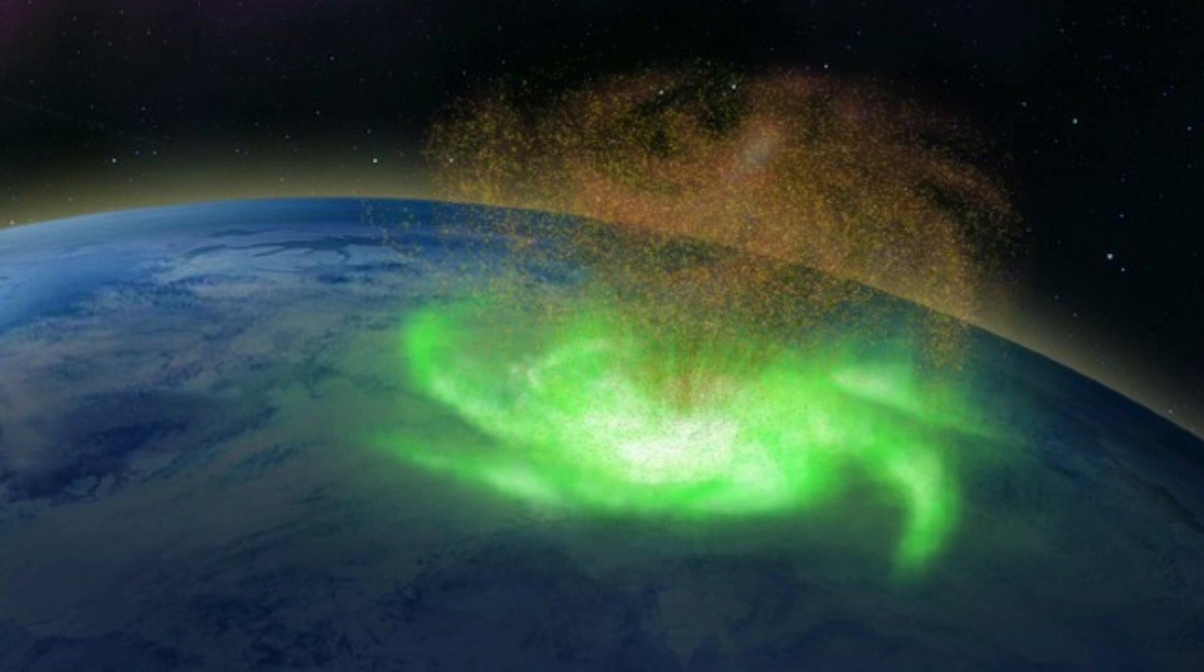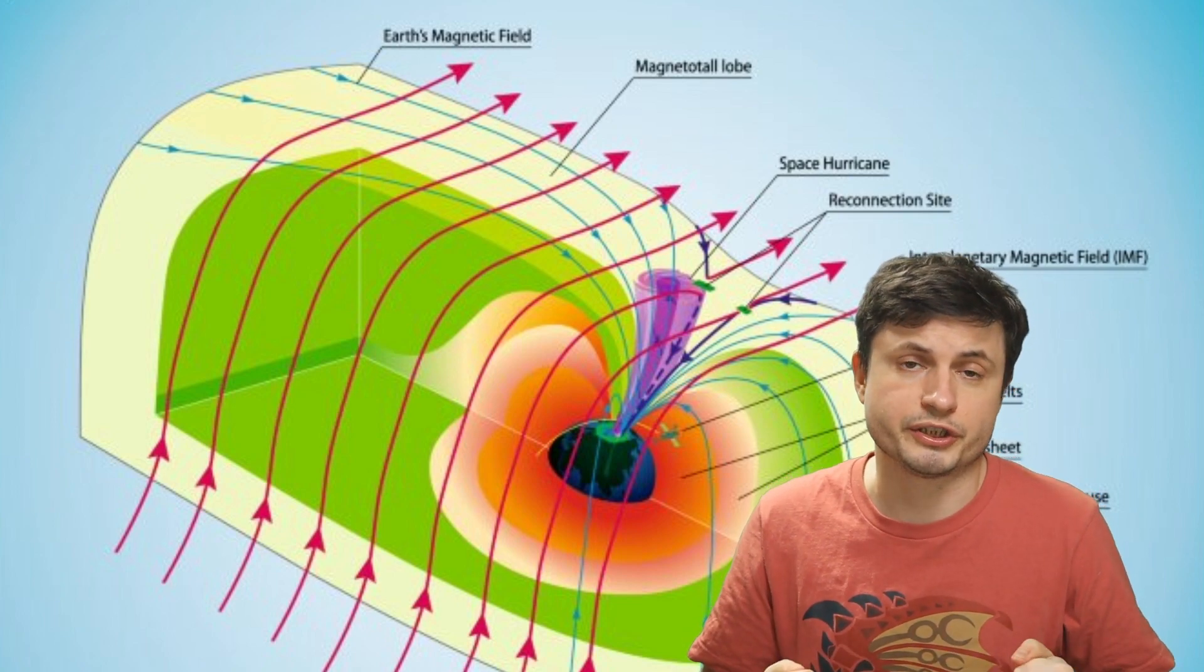It also seemed to contain multiple spiral arms like a typical hurricane. And just like a hurricane as I mentioned before it also had precipitation. But it wasn't rain, it wasn't water, it was electrons. Something that you see illustrated in this image right here. But how this was generated is of course another question.